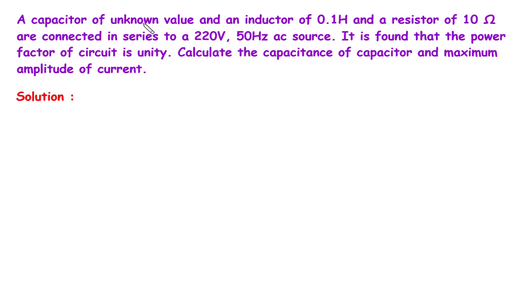A capacitor of unknown value, an inductor of 0.1 henry, and a resistor of 10 ohm are connected in series to a 220 volt 50 hertz AC supply. It is found that the power factor of the circuit is unity. Calculate the capacitance of the capacitor and the maximum amplitude of current.